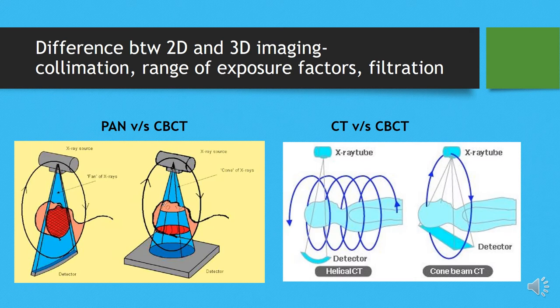In comparison, CT uses a fan-shaped slit beam — as shown on the left — where each rotation gives one slice of image that is then reconstructed. In CBCT, shown on the right, the cone beam covers the entire area in one single rotation. It covers the entire area at once.